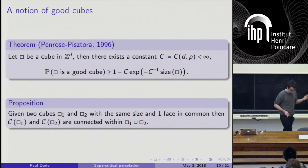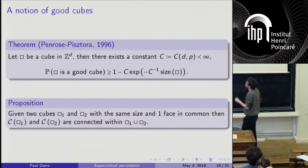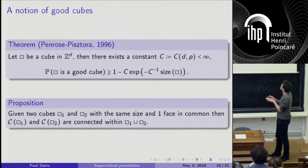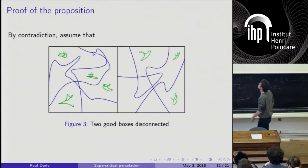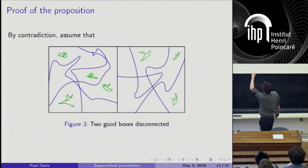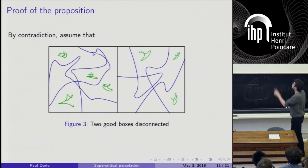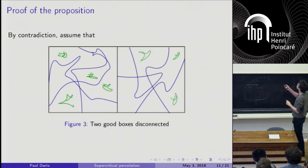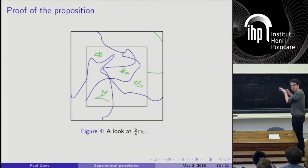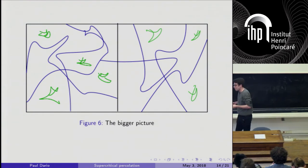A good cube has a big cluster within it and small clusters. I'll give one key property: if you take two good cubes sharing a face, then their two big clusters are connected. To see this, focus on the left cube and look at its 5/4-enlargement. The part of the right cube's big cluster that extends into this region is too big to be an isolated cluster — it must connect to the big cluster of the left cube. This tells you the two big clusters are joined.